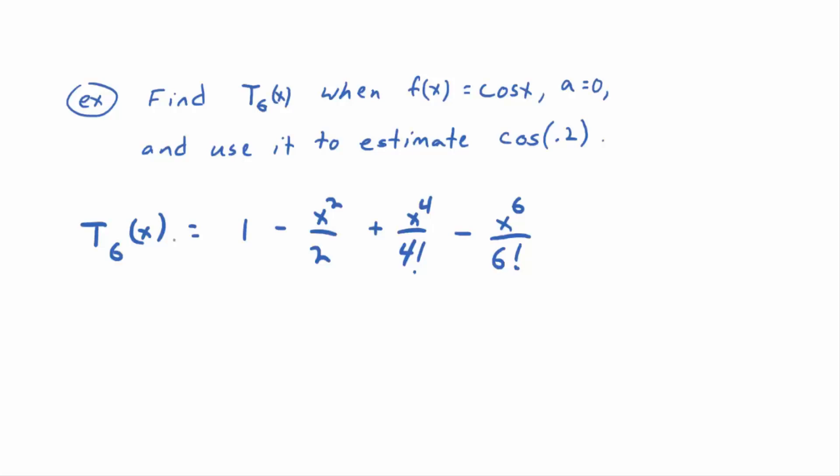So then, what could we do? Just plug in 0.2, and we'd have one minus 0.2 squared over two, plus 0.2 to the fourth power over four factorial, minus 0.2 to the sixth power over six factorial.